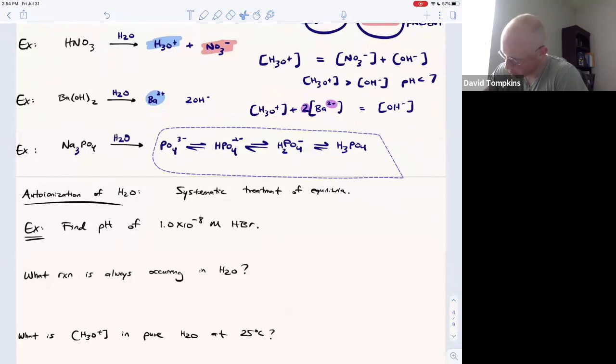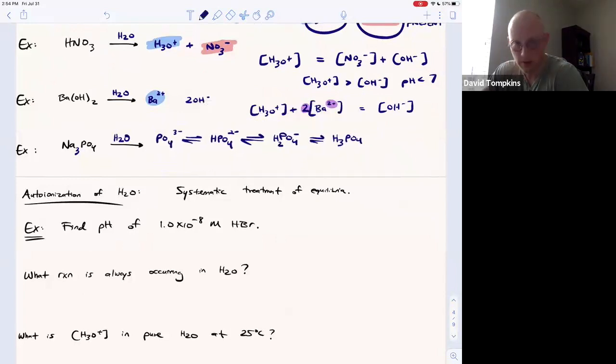So these polyprotic ones, it's a little bit more difficult to write the charge balance equation. We're going to ignore phosphoric acid because it's neutral. So it does not go into the charge balance equation, although it would affect the mass balance.